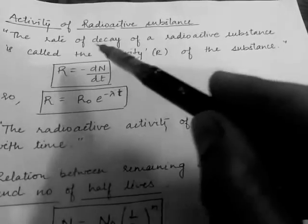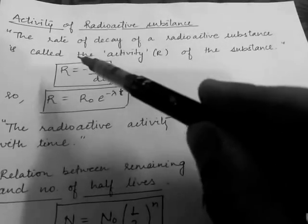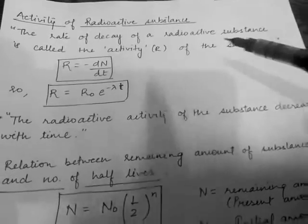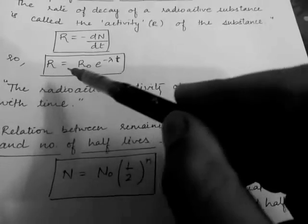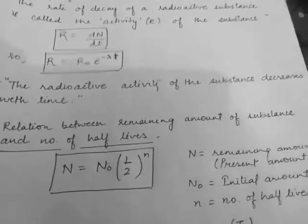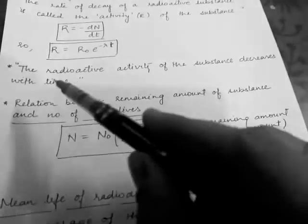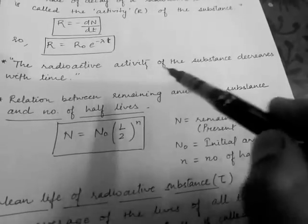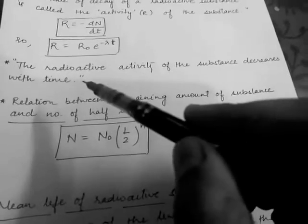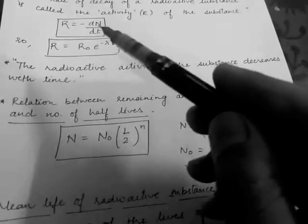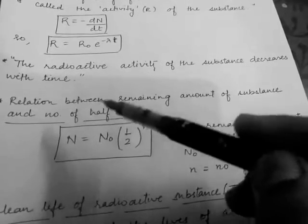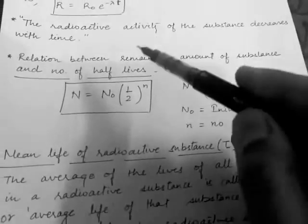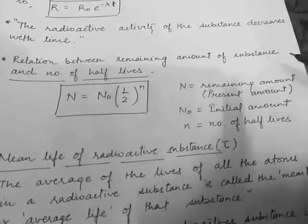The next topic is activity of a radioactive substance. The rate of decay of a radioactive substance is called its activity. The rate of decay is minus dN/dt, so activity R equals R₀ e^(−λt). This means the activity of a substance decreases with time, as seen from the expression R = minus dN/dt and R = R₀ e^(−λt).